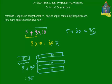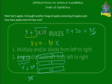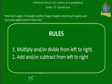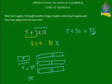So let's define the rule. When we have a combination of additions, subtractions, multiplications, and divisions, we do all the multiplications and divisions first from left to right, and after that we do all the additions and subtractions again from left to right.